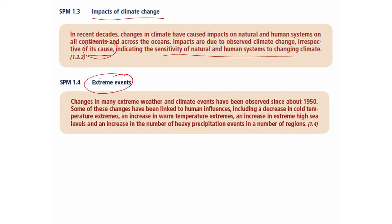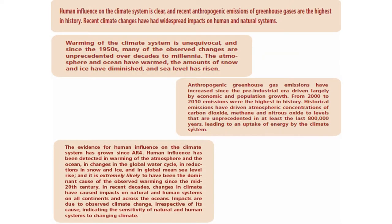Extreme events will be discussed in more detail in the monsoon case. Changes in many extreme weather and climate events have been observed since about 1950. Some have been linked to human influences, including a decrease in cold temperature extremes, an increase in warm temperature extremes, an increase in extreme high sea levels, and an increase in heavy precipitation events in a number of regions. This is distributed unevenly, which is why we need to project exactly where conditions will get worse and in what form — extreme winter storms, summer storms, cyclones, tornadoes, storm surges, and inundations.